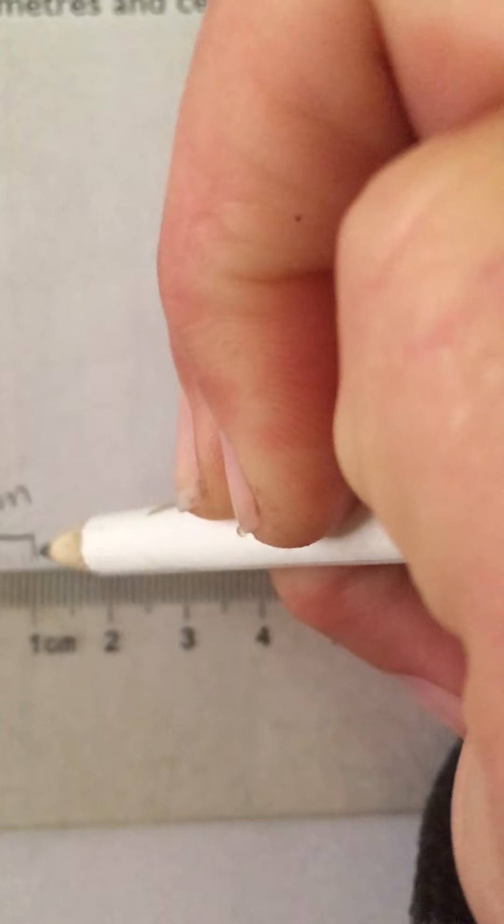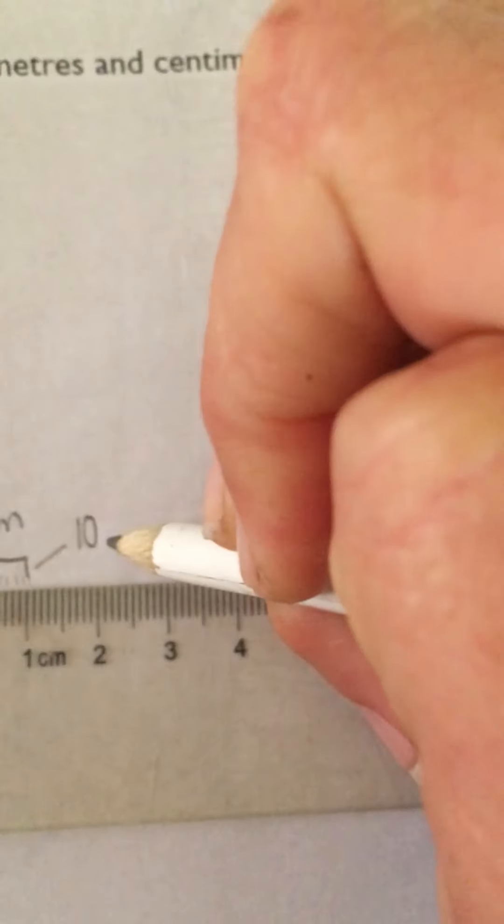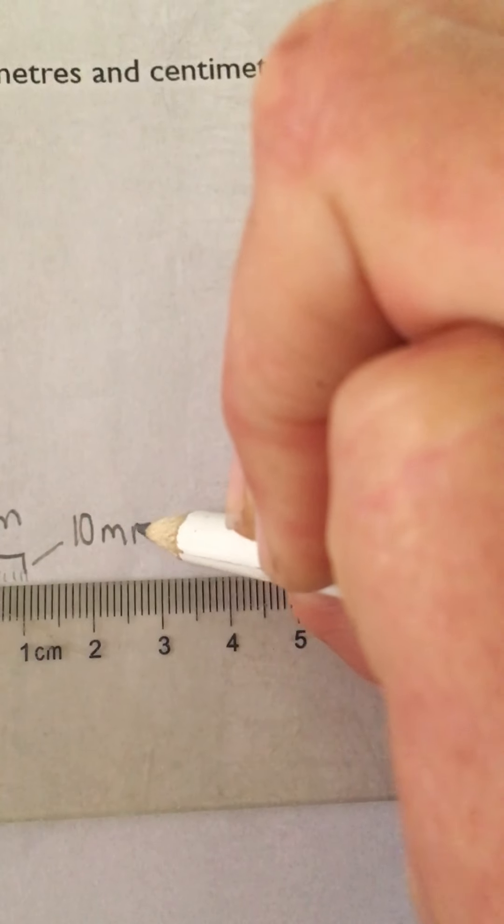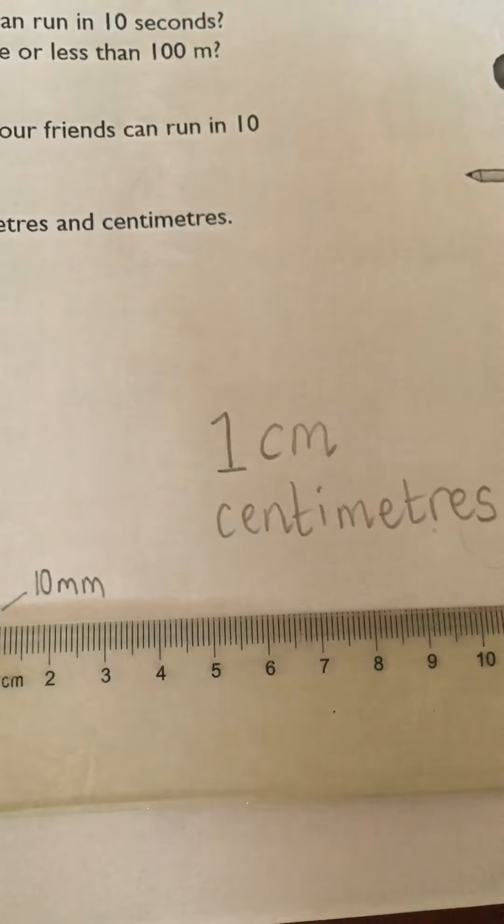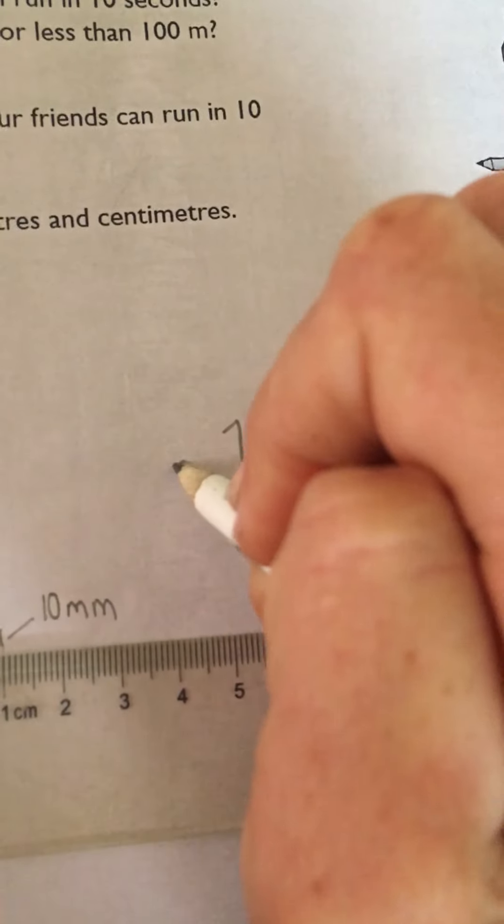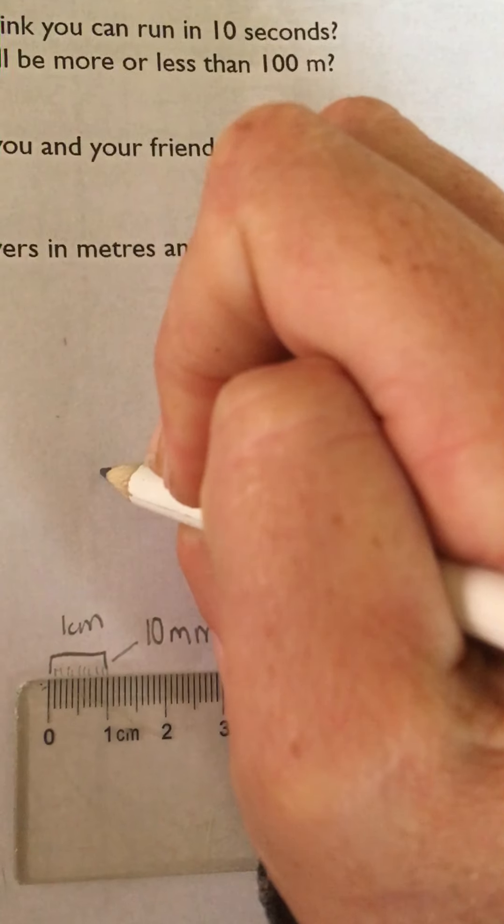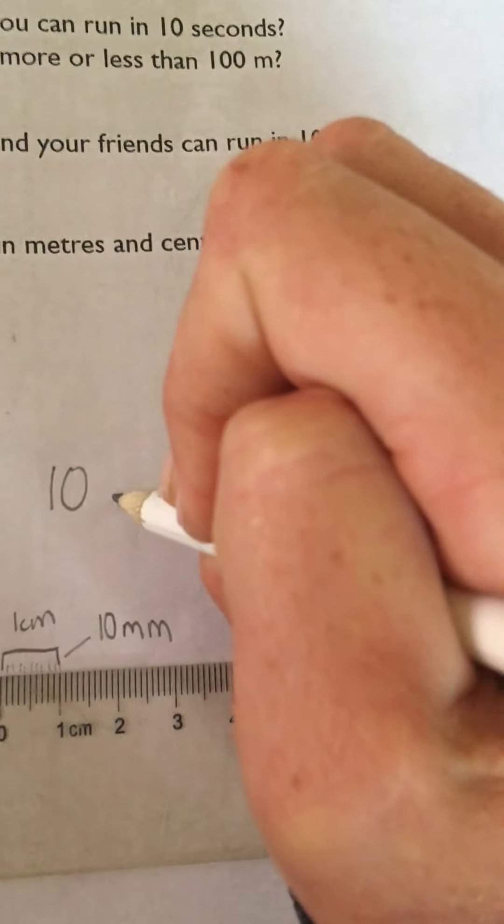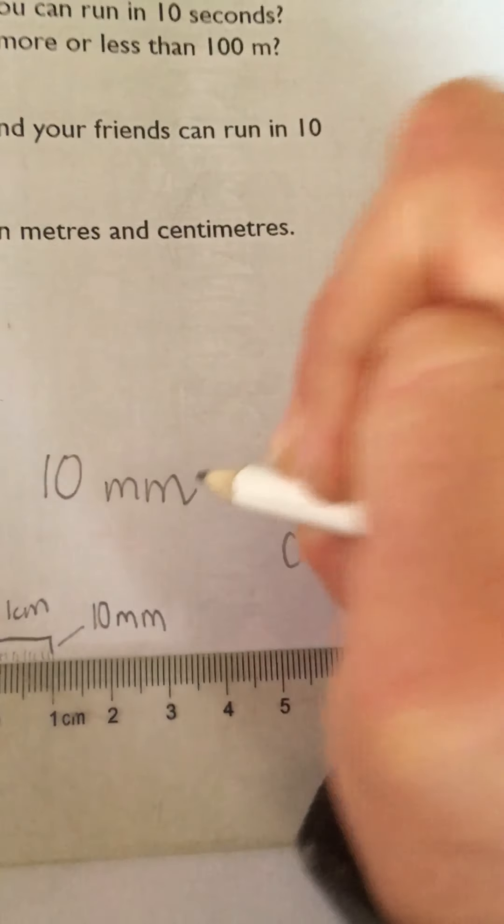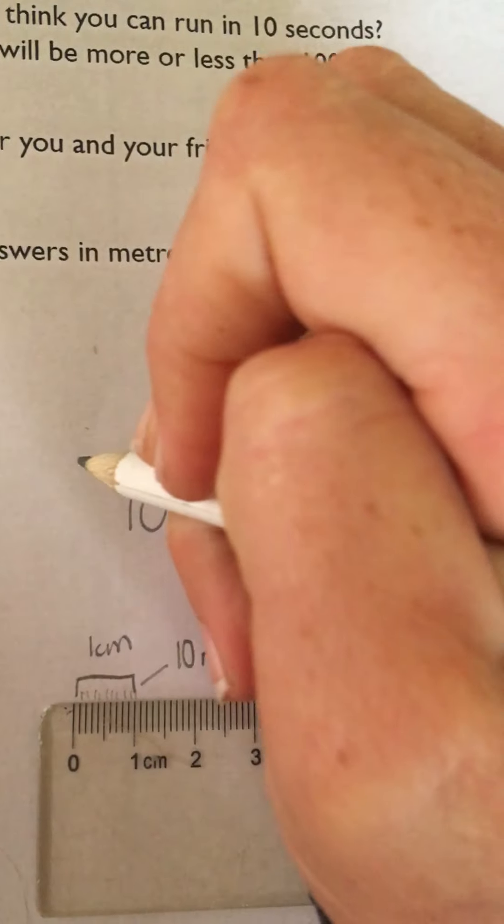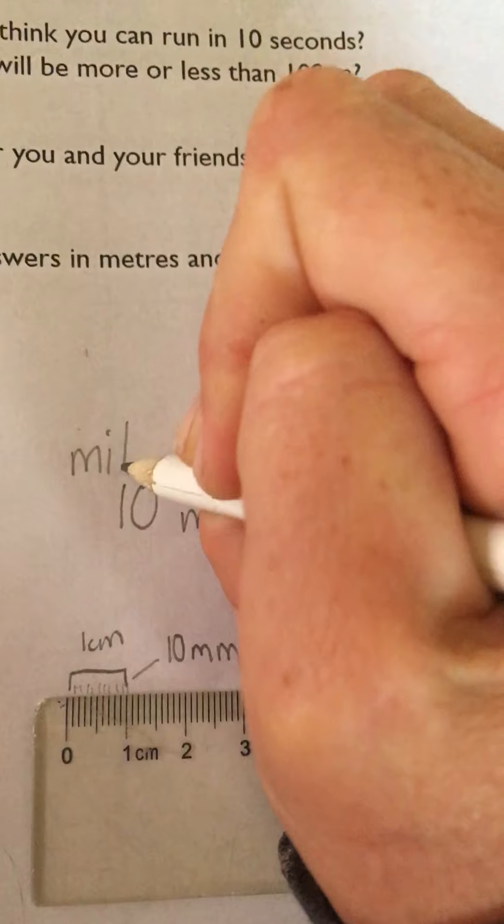We discussed the other day that these little ones in the middle - 1, 2, 3, 4, 5, 6, 7, 8, 9, 10 - so there are 10 of them, and those are millimeters. One centimeter is the same as 10 millimeters.